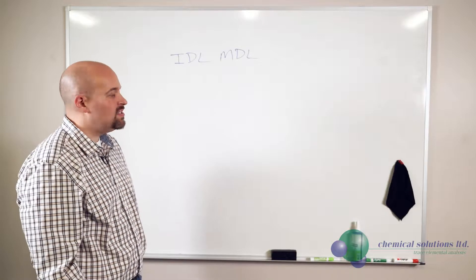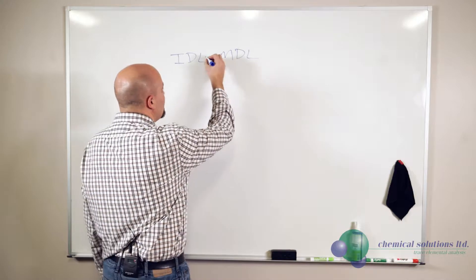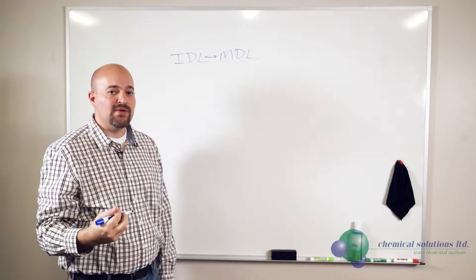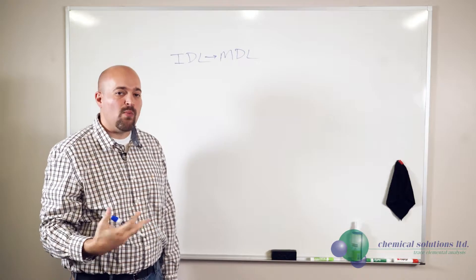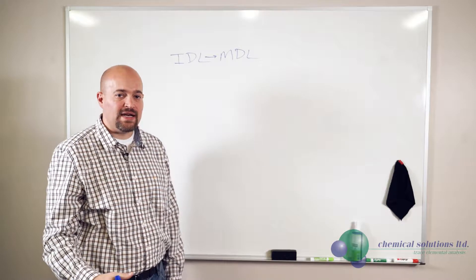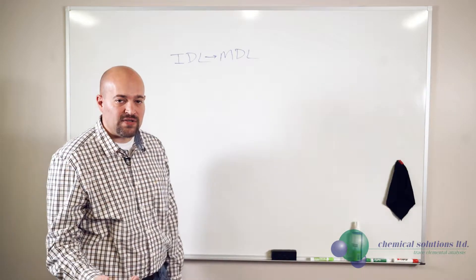So in essence, when you move to an MDL, you're now saying you can see something and now you can estimate with 99 percent certainty how much of that you're able to see, what the concentration is with 99 percent certainty. There's still a little bit of uncertainty.